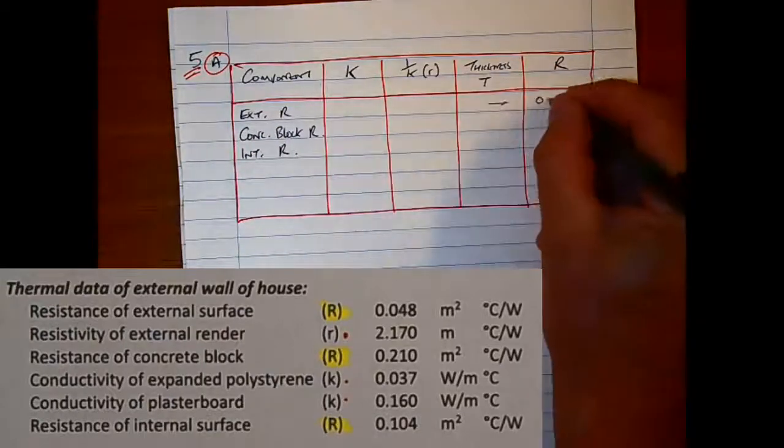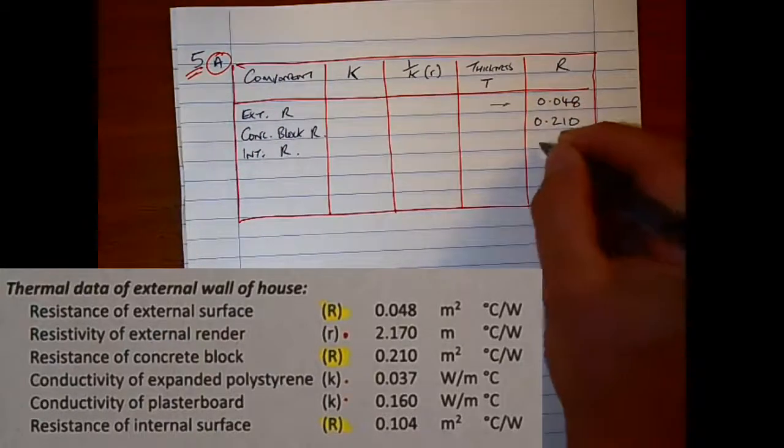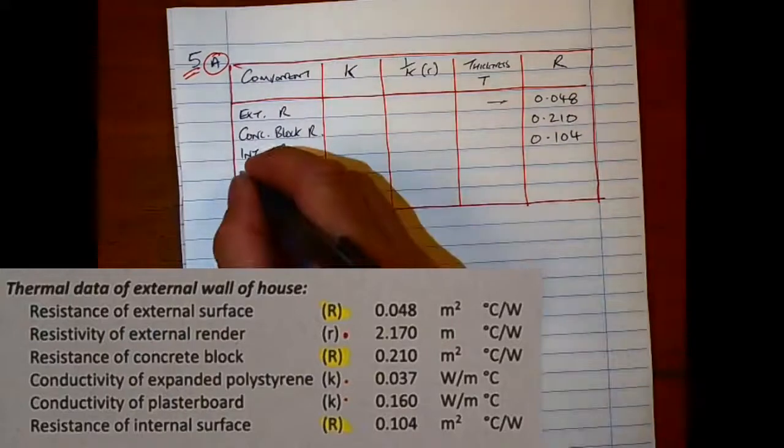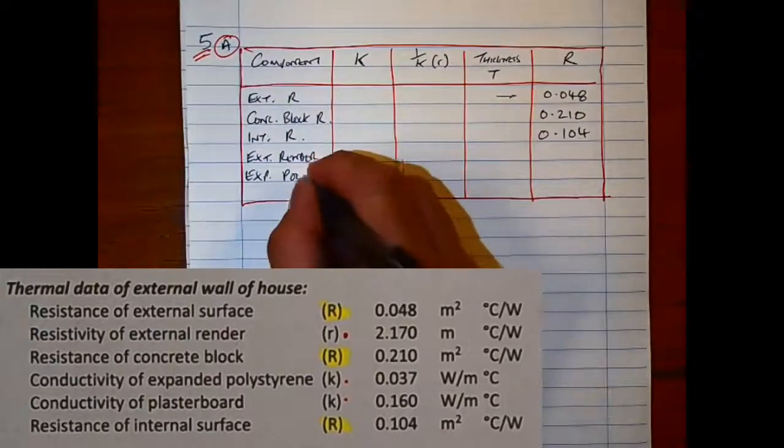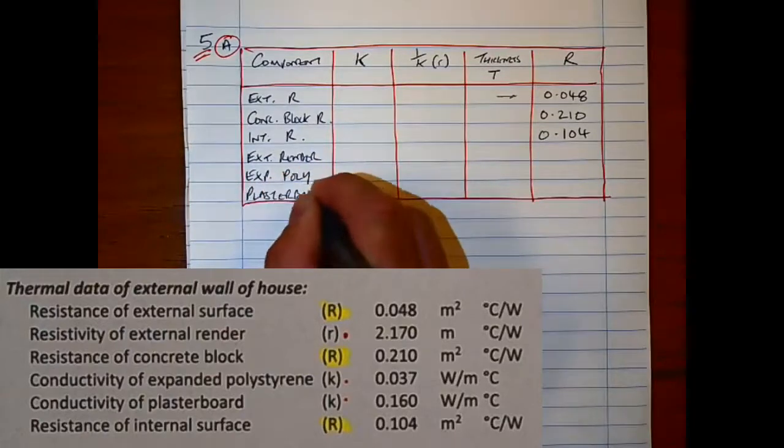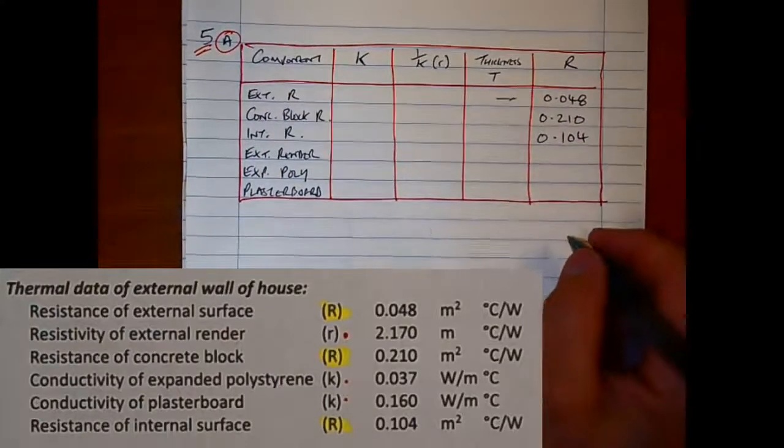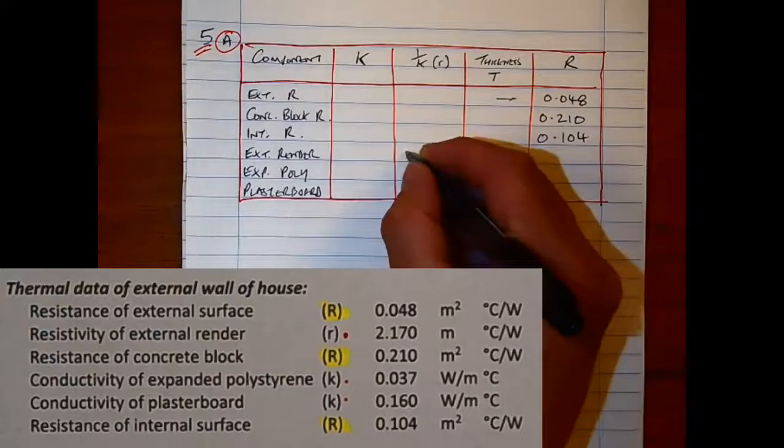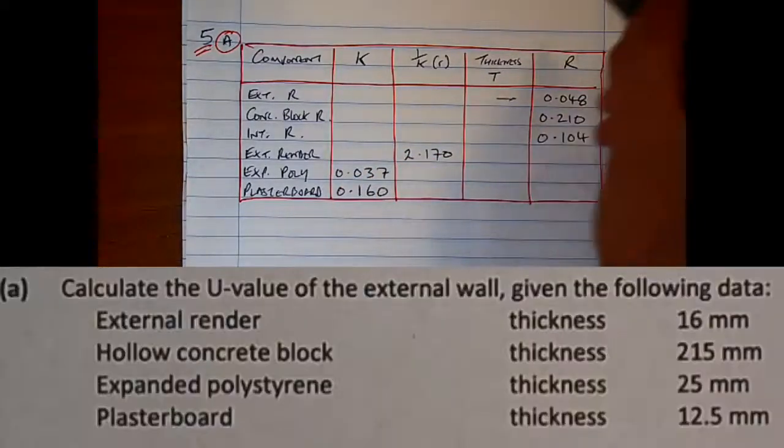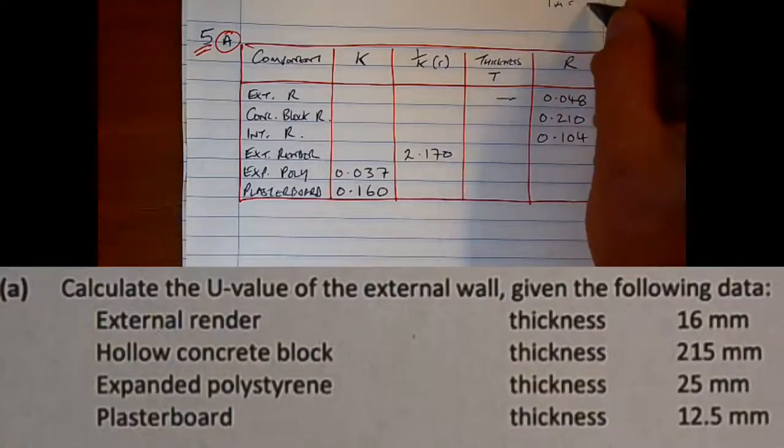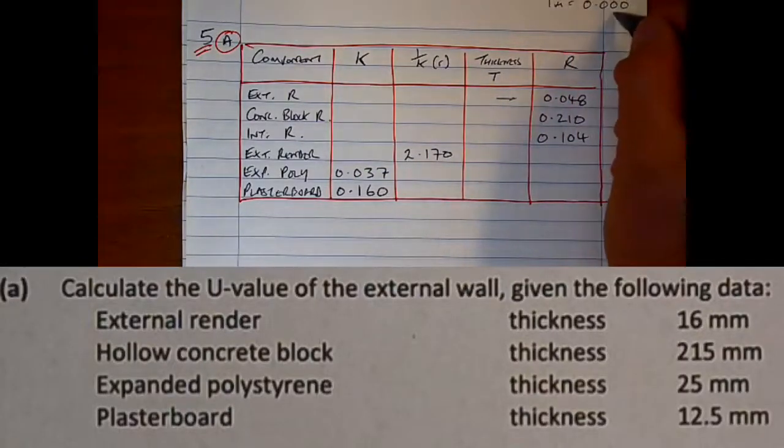The only thing in this question that was a little bit different from other years is the cinder block wall. There's no allowance for that except for the resistivity and resistance. We have those at the start. Even though it gives you the thickness, there was no conductivity or resistivity given for that.